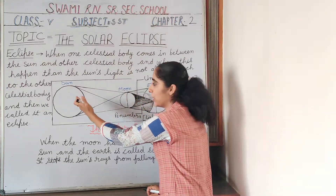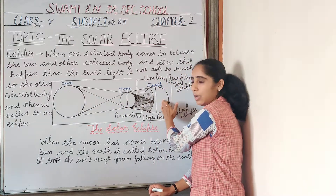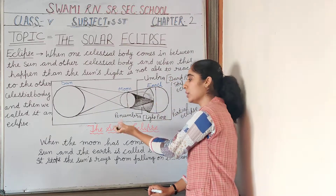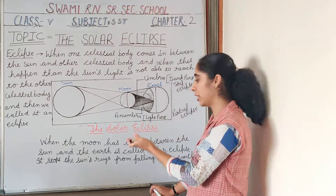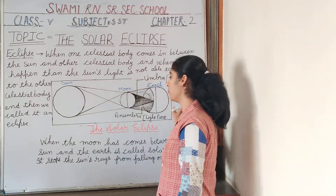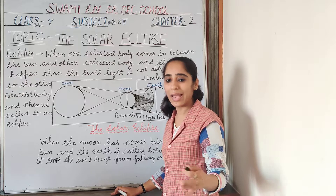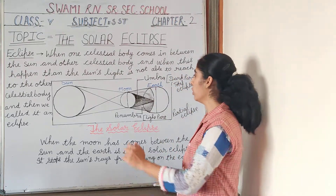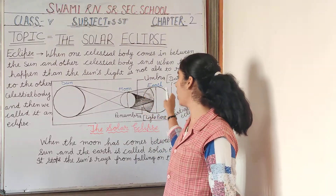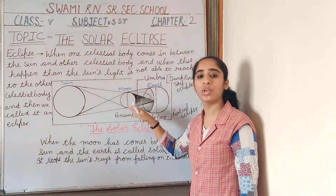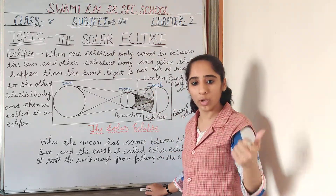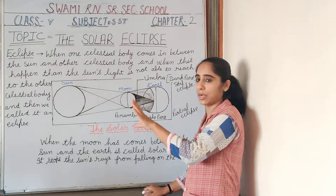When the moon comes between the sun and the earth and the moon stops the sun rays falling on the earth, it is called a solar eclipse. This process is called the solar eclipse. The shadow of the moon falls on the earth only for a few minutes.